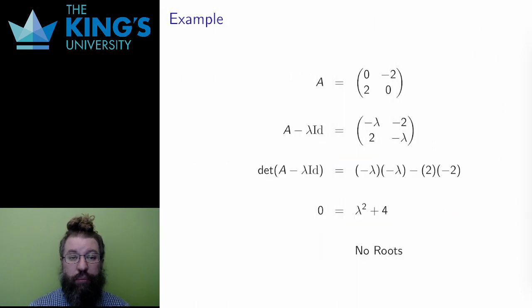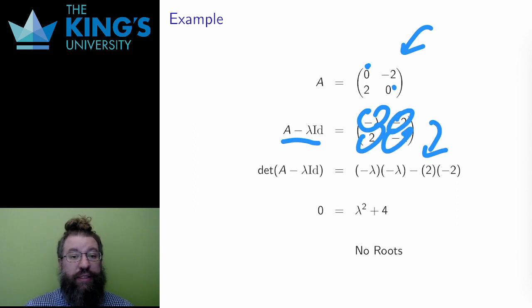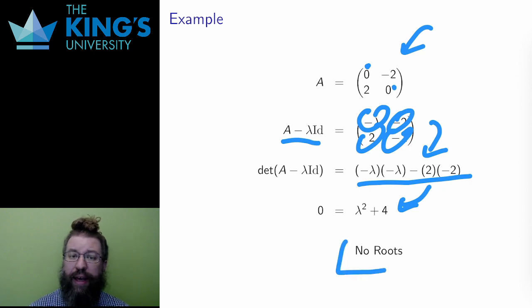Here is another example. This is not a symmetric matrix, so I am not guaranteed to find eigenvalues and eigenvectors. I calculate A minus lambda identity, which means subtracting lambda from each diagonal entry. Then I calculate the determinant of all this using the AD minus BC pattern for a 2 by 2 determinant. I expand the pieces to get this characteristic polynomial. In this case, it is lambda squared plus 4. This polynomial has no real roots, so there are no eigenvalues and eigenvectors.